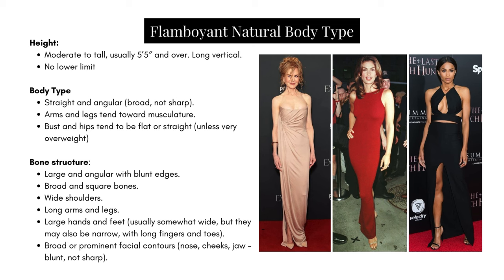The bust and hips tend to be flat or straight unless overweight. The bone structure is large and angular with blunt edges — broad and square bones, wide shoulders, long arms and legs, large hands and feet, usually somewhat wide but may also be narrow.